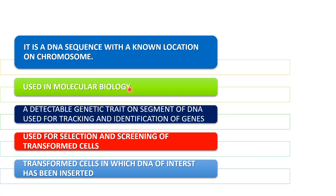Marker genes are used in screening and selection of transformed cells. This is a technique called genetic engineering or recombinant DNA technology. In that technology, we want to raise transgenic or transformed crops with characteristic features like high yield, good nutritional quality, resistance to herbicides, resistance to pests, and resistance to various diseases.